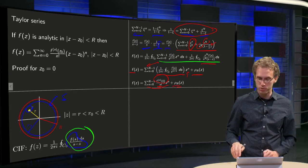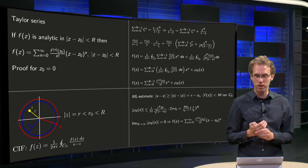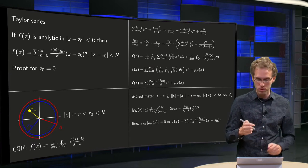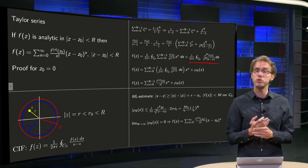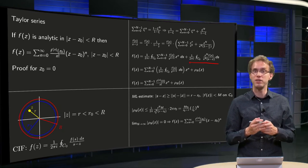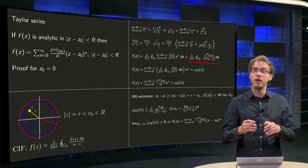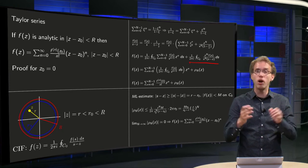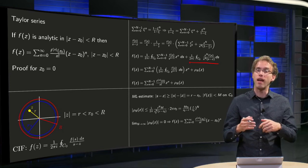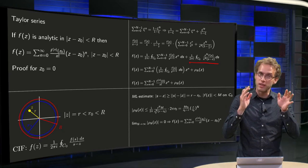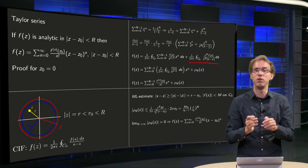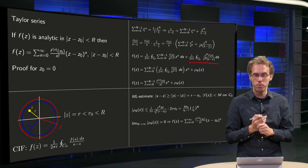So all we still have to do is show that the remainder goes to zero. So how are we going to kill this integral? We are going to use an ML estimate. If the norm of the integrand is smaller than some capital M, then the norm of the integral is smaller than the length of the integration interval times this number.